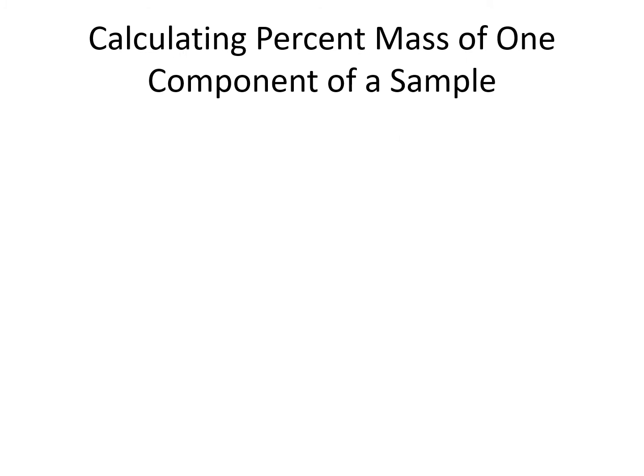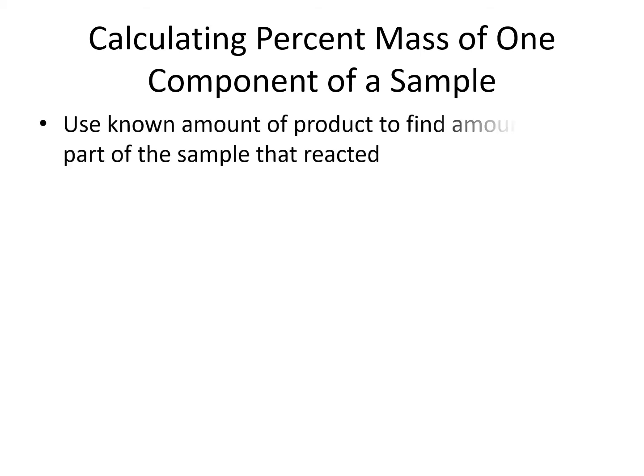We can use gravimetric analysis to calculate percent mass of one component of a sample. We use a known amount of product to calculate the amount of the component we are interested in within the sample.